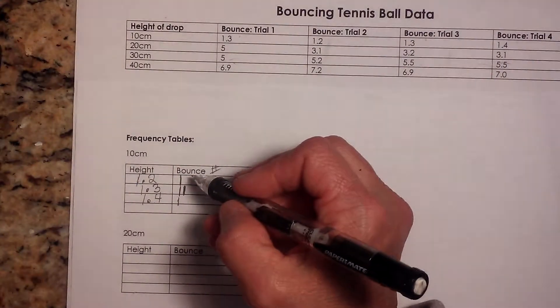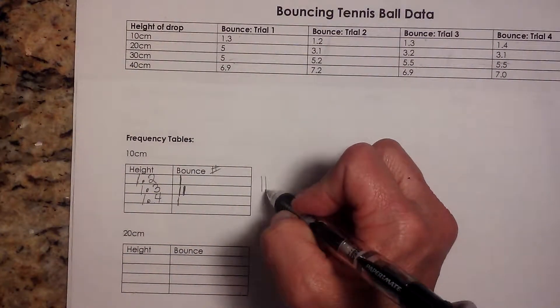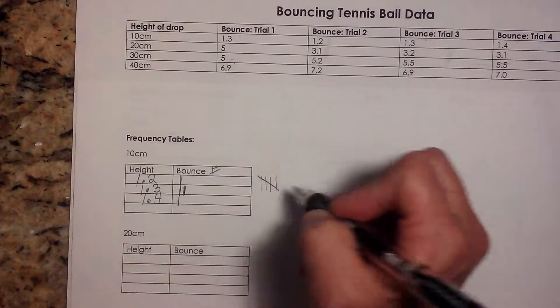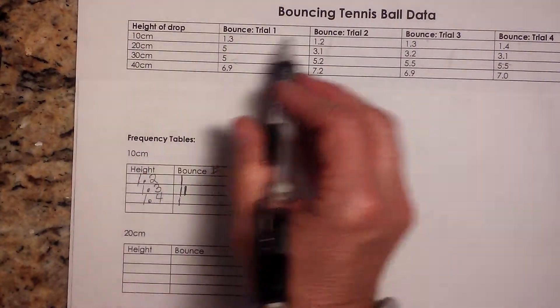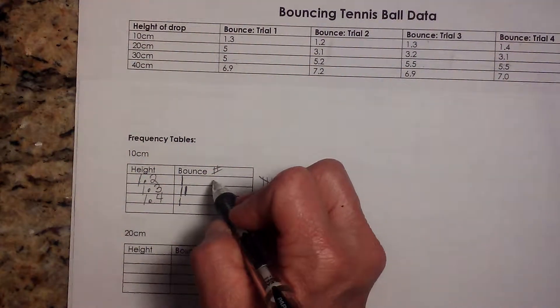So if you have, let's say, 50 trials, you can just make tallies where you go one, two, three, four. And on the fifth one, you make a group. OK, for our purposes, we're just looking at four trials. So it's pretty easy.